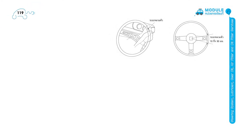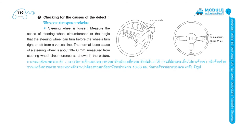Page 119. Checking for the causes of the defect — steering wheel is loose. Measure the space of steering wheel circumference, or the angle that the steering wheel can turn before the wheels turn right or left from a vertical line. The normal loose space of a steering wheel is about 10 to 30 millimeters, measured from the steering wheel circumference as shown in the picture.